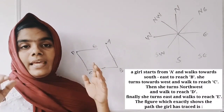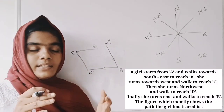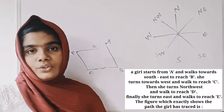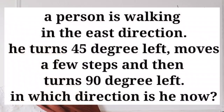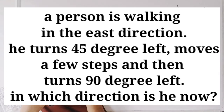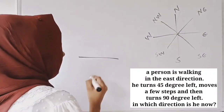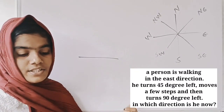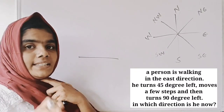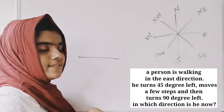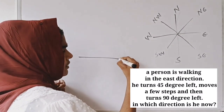Now we are learning this figure. A person walking in an East direction turns 45 degrees left, moves a few steps, and then turns 90 degrees left. In which direction is he now? When the person is walking in the East direction, it is 45 degrees left. Full left is different from 45 degrees left.